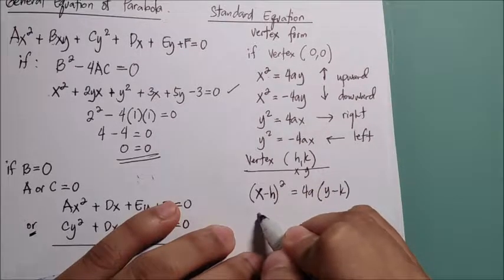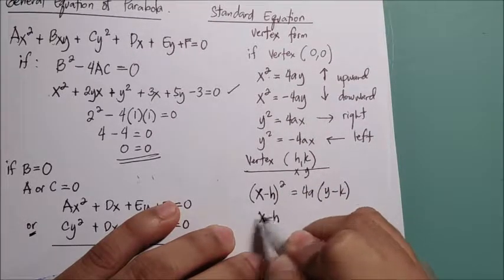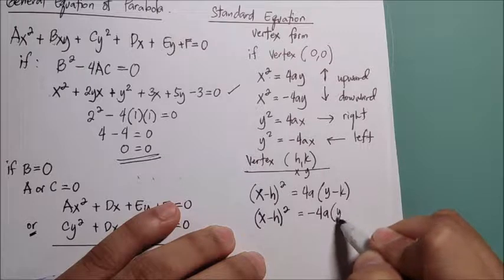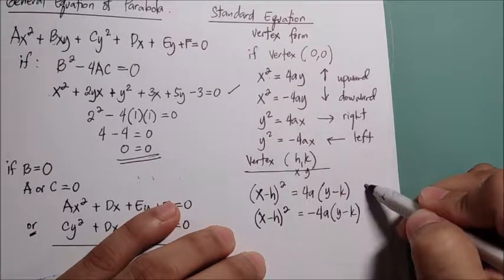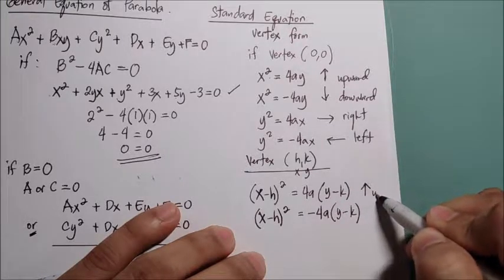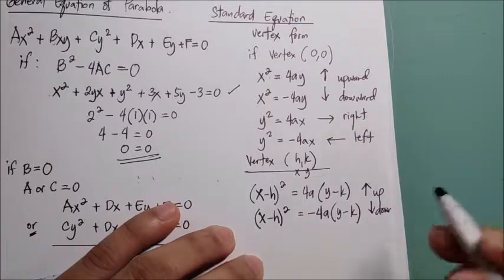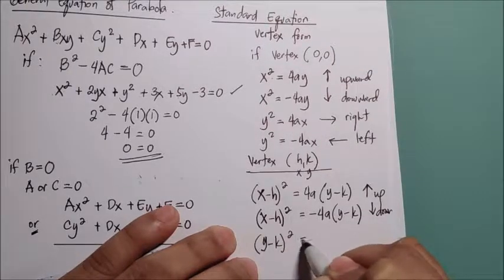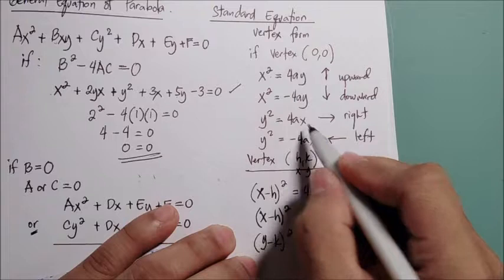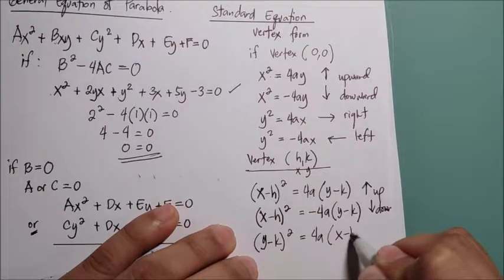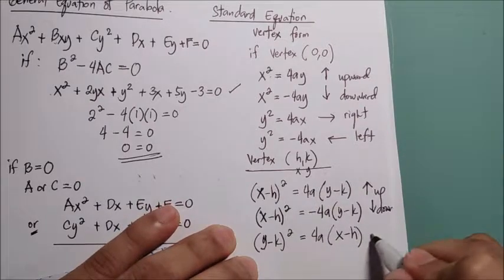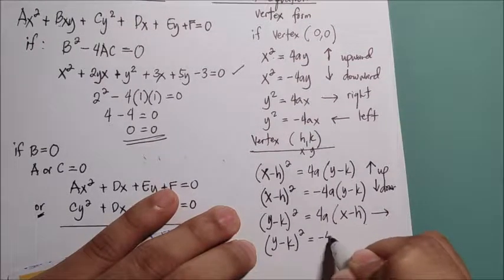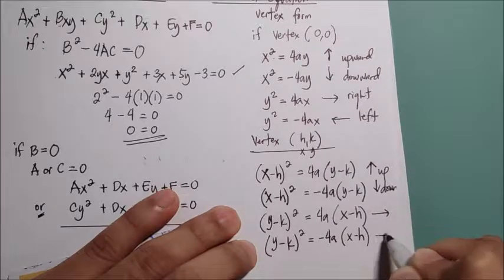For a parabola opening to the right: (y − k)² = 4a(x − h). For a parabola opening to the left: (y − k)² = −4a(x − h). The first form opens upward, the second opens downward, the third opens to the right, and the fourth opens to the left.